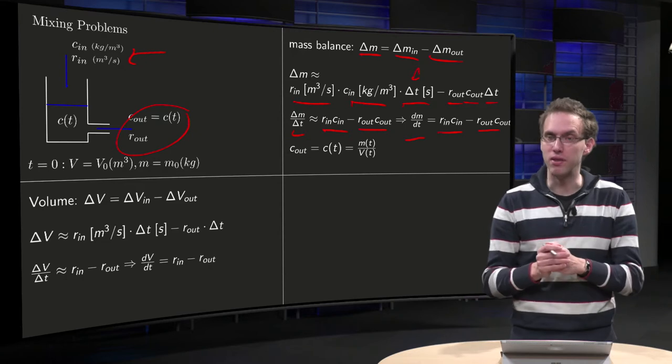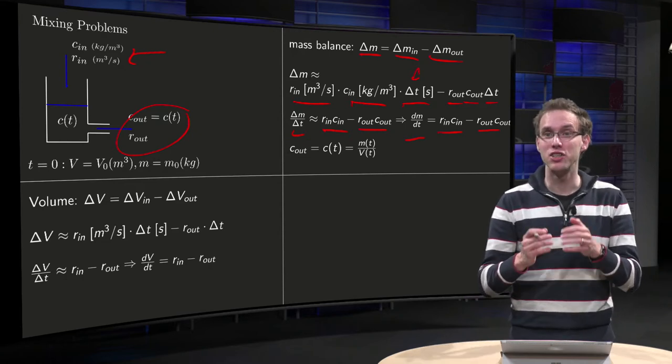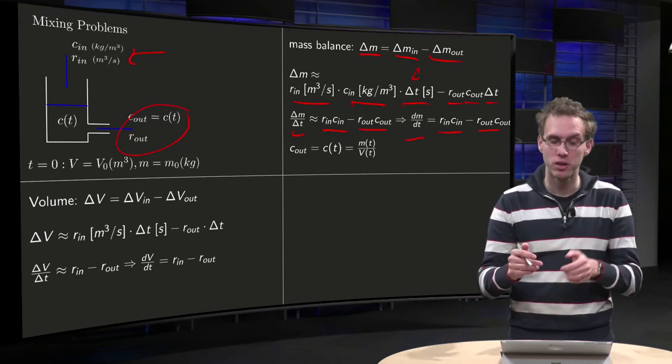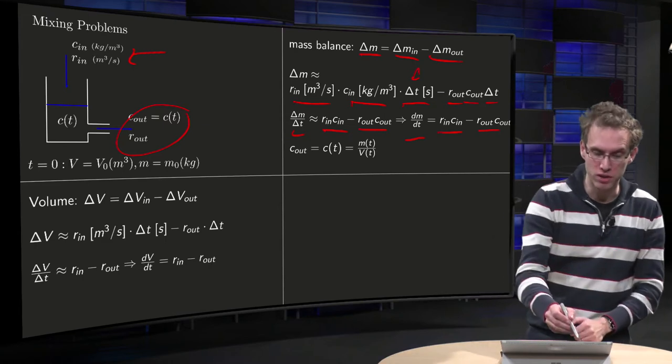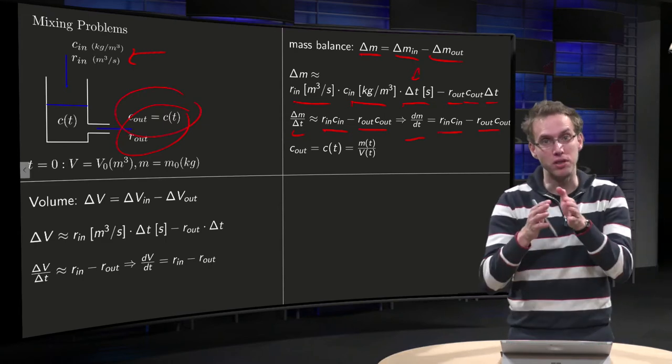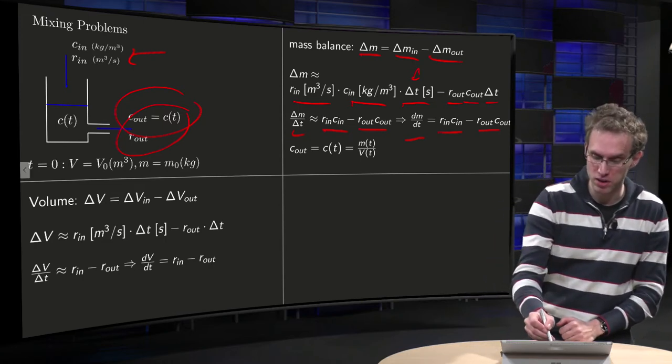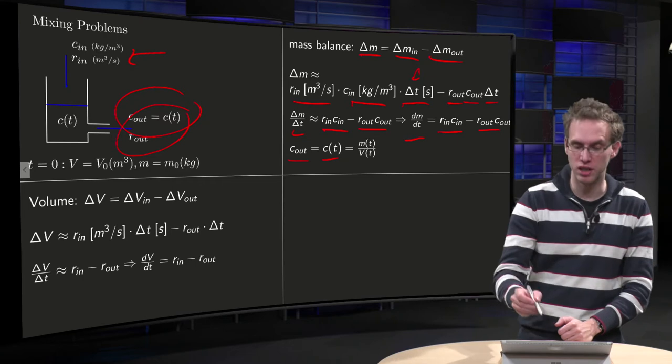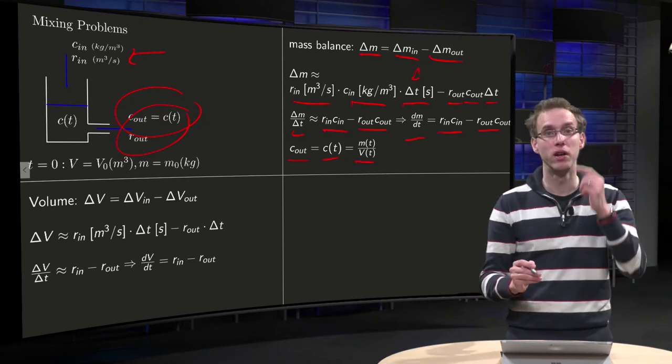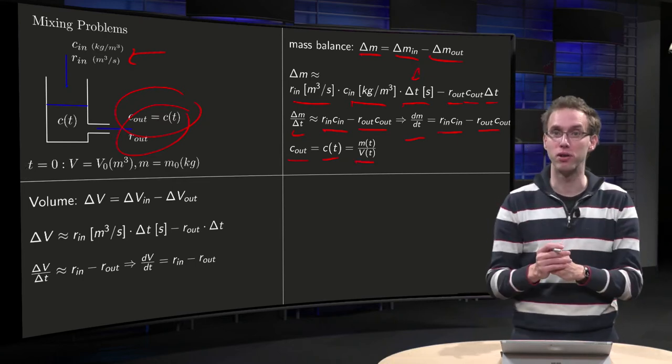And how can we then finally relate this c_out to the mass? Well, c_out was equal to the concentration of the salt in the tank, because the salt is well stirred. And for the concentration we know that c_out equals c of T, and concentration equals mass over volume, mass in the tank divided by the volume in the tank of the salt.